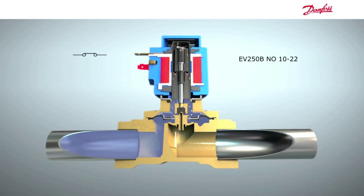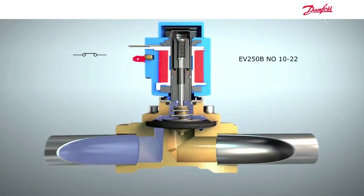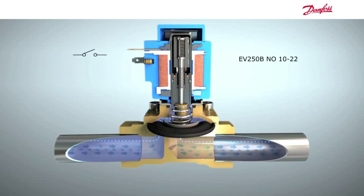This EV250B has the same lift assist feature as the normally closed version. If the pressure is too low when the coil is de-energized, the lift assist spring will lift the diaphragm and open the valve.